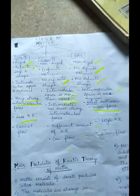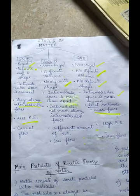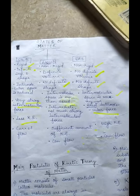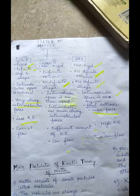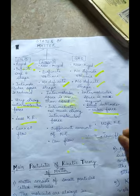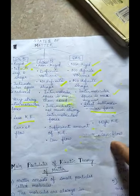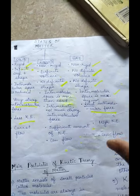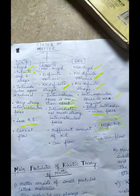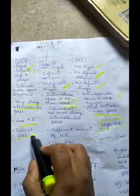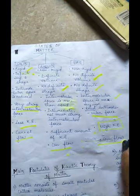Kinetic energy is the energy possessed when molecules move randomly. In solids, since the molecules are tightly packed, they have less kinetic energy. In liquids, they are loosely packed, so they have a sufficient amount of kinetic energy. In gases, the molecules are very loosely packed, so they have a higher amount of kinetic energy. Solids cannot flow, whereas liquids and gases can flow.